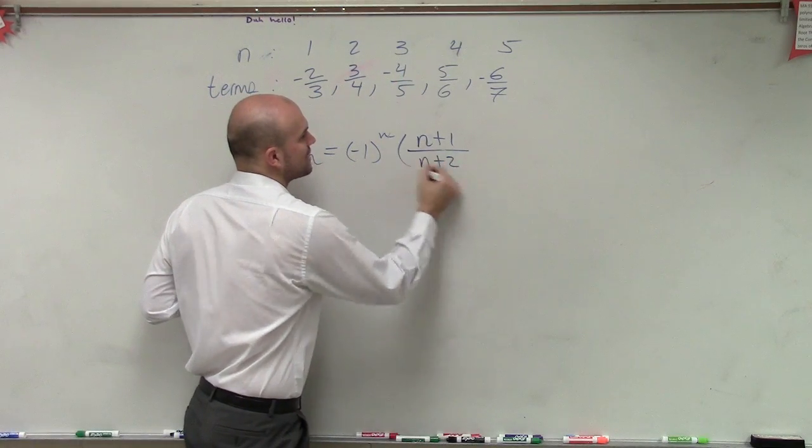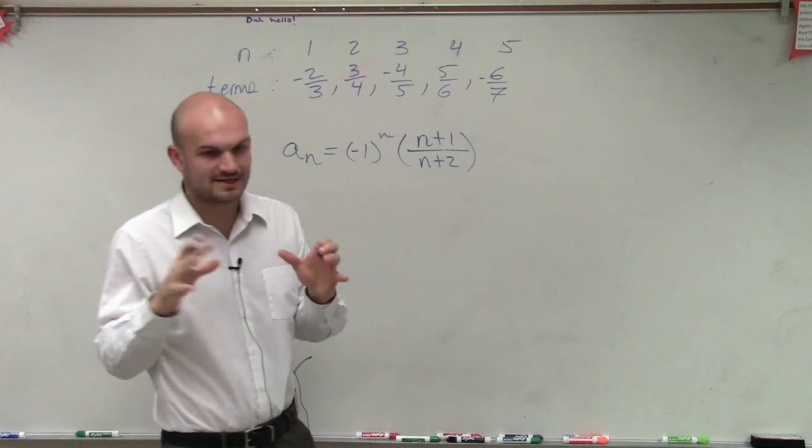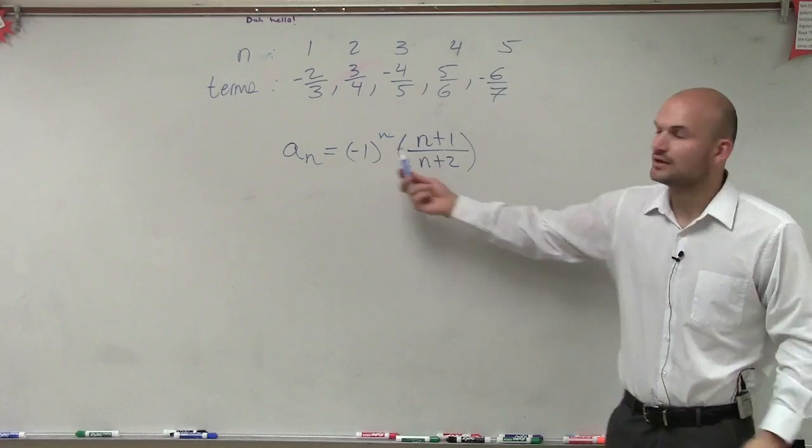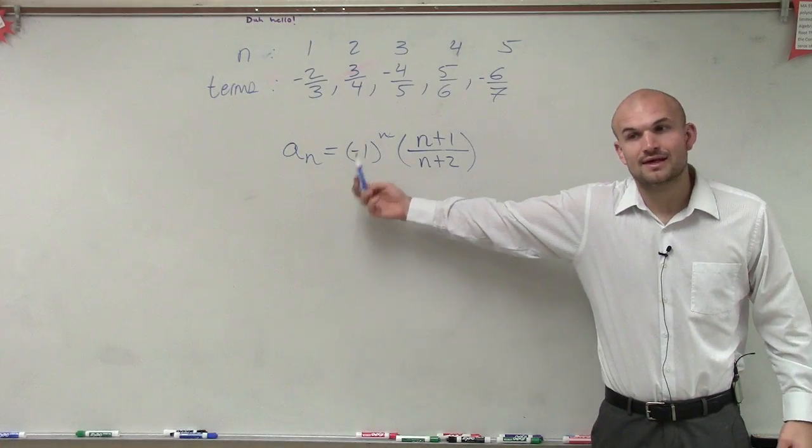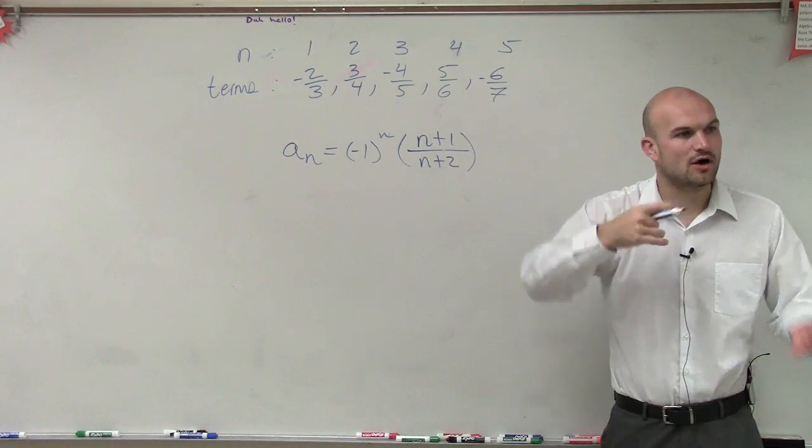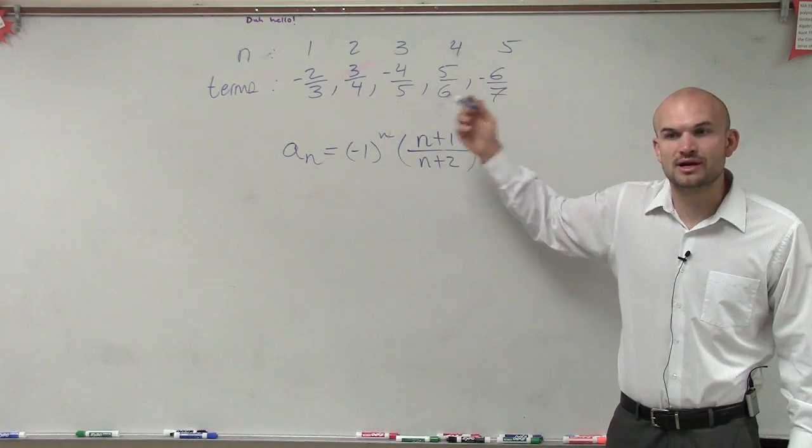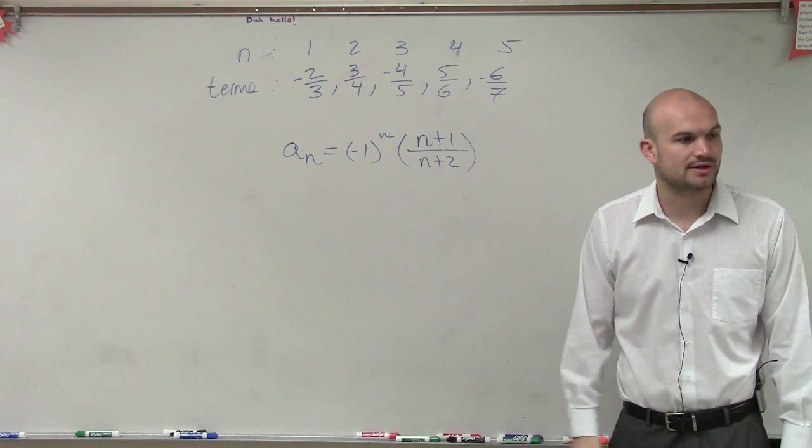So rather than trying to look at this always as one big picture, just break it down. Once you see that you have an alternating sign, we go ahead and take a look at this. Then when you have fractions, don't try to always confuse fractions. Just break it up one numerator and denominator so you can do them individually, OK?